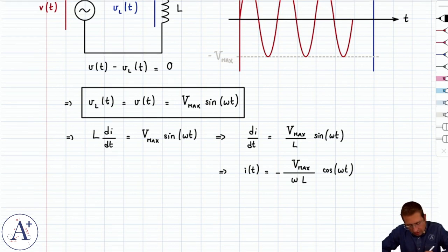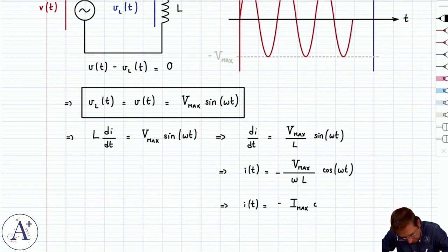Which you could leave in that form if you want, or write i(t) equals minus Vmax divided by ωL. And so that's your current through the circuit.